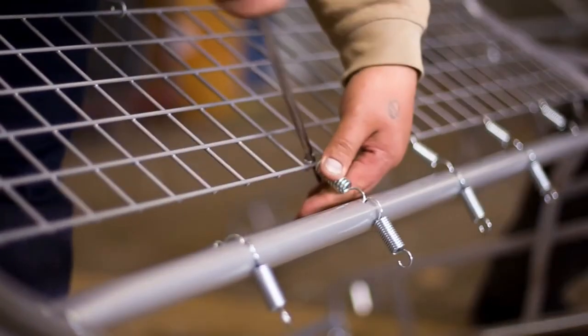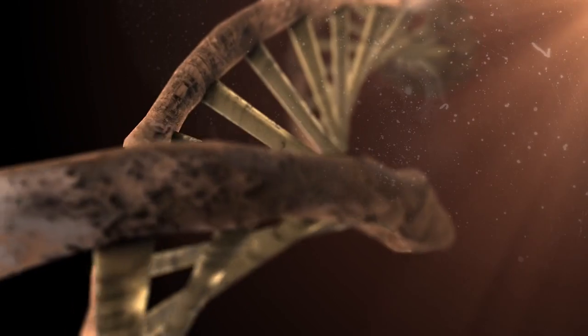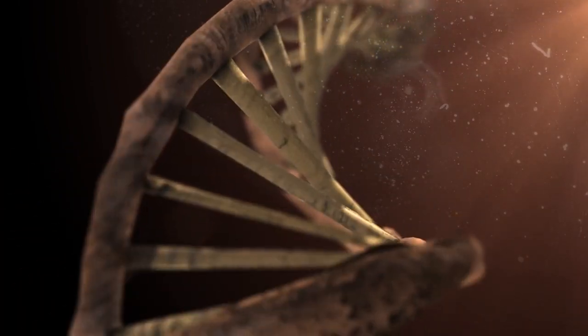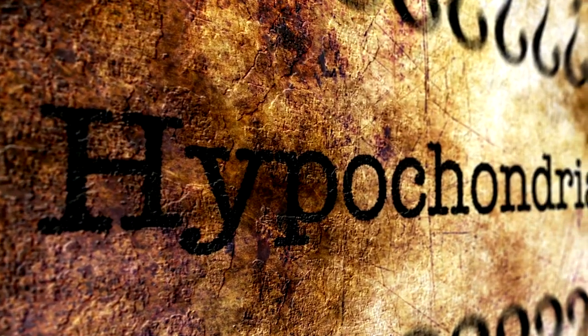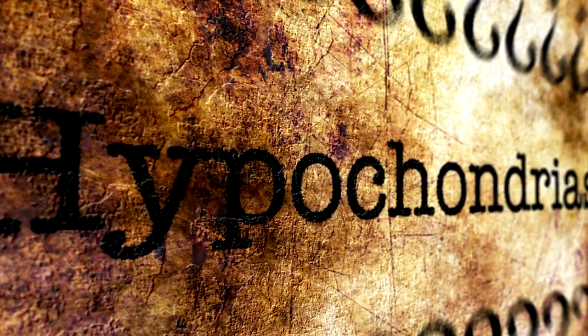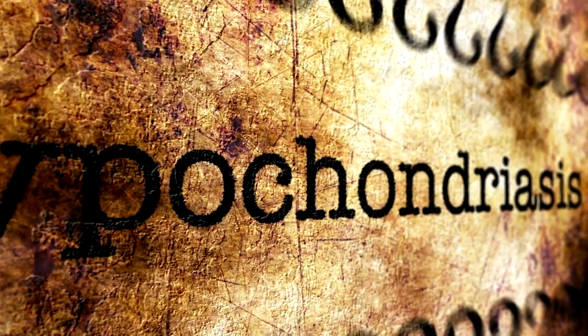Imagine a factory where the machines start breaking down, production slows and chaos ensues. The same thing happens in your cells when mitochondria aren't working properly. When they malfunction, it can lead to a whole host of problems. Muscle weakness, fatigue, even diseases like Parkinson's and Alzheimer's.